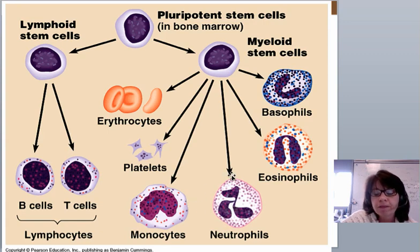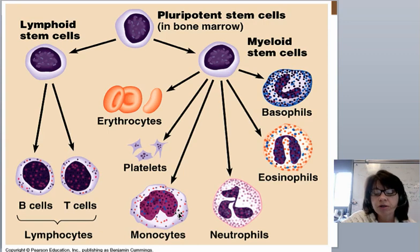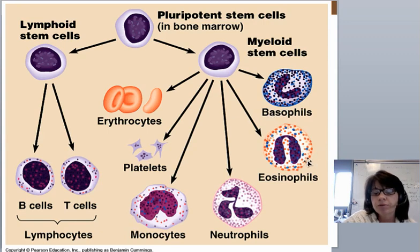Neutrophils are another type of phagocytic cell that engulf pathogens and eat them up. The difference is that when a neutrophil engulfs and destroys a pathogen, the neutrophil dies too — pus that builds up in a wound or a pimple is basically dead neutrophils and the things they've eaten. Monocytes, on the other hand, act as antigen-presenting cells. They eat up pathogens, chop them into little pieces, and present them to the T-cell world to signal there's a problem. Eosinophils and basophils are involved in removing parasites — things that are a little less prokaryotic and more eukaryotic.